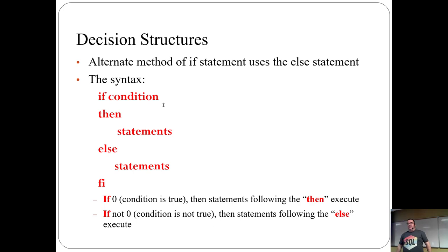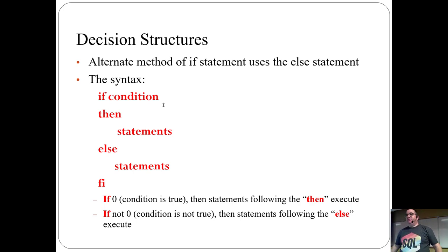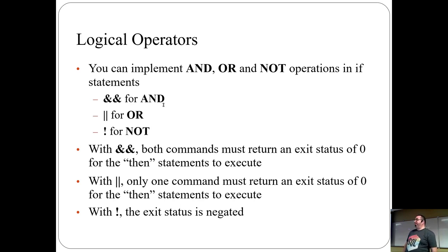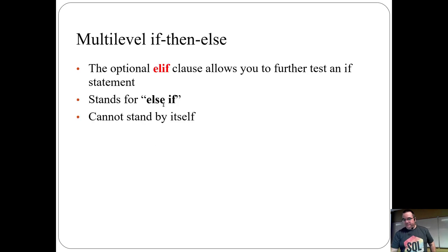We also have an else statement: `if condition; then ... else ... fi`. This is just like what you're used to in Java except no brackets and no curly braces. You can put square brackets to combine things. For multiple operators, it's double ampersand `&&` for AND, double pipe `||` for OR, and exclamation mark `!` for NOT. We also have else-if, known as `elif`: `if ... then ... elif ... then ... else ... fi`.